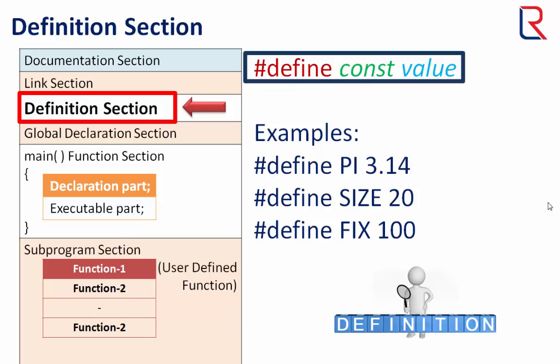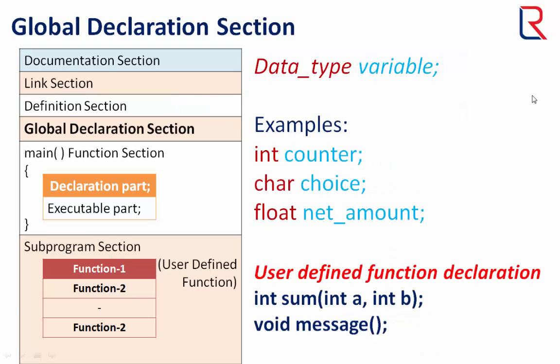Now time to global declaration section. There may be some variables that are used in more than one function. Such variables are called global variables and are declared in the global section, that is outside of all functions. This section also declares all the user defined functions. Here are some examples of global declaration of variables and user defined functions.